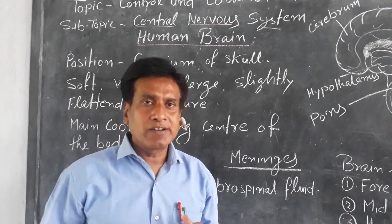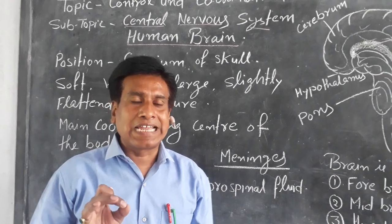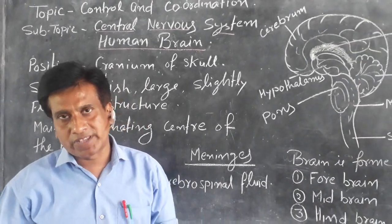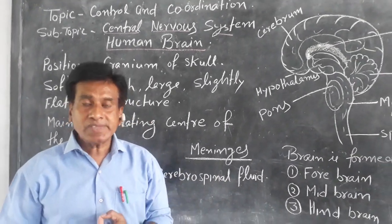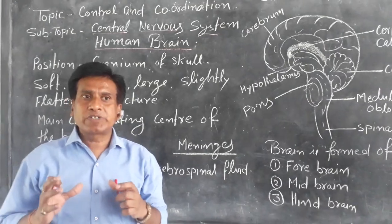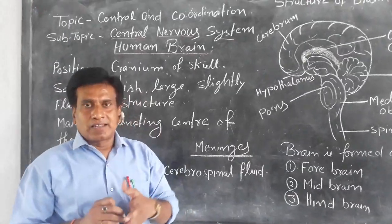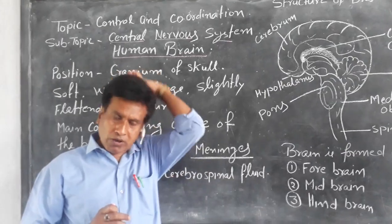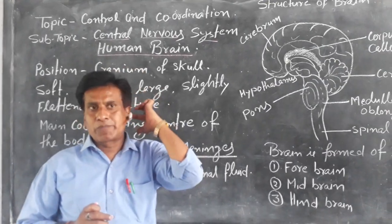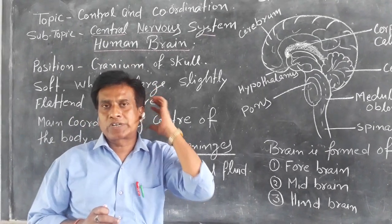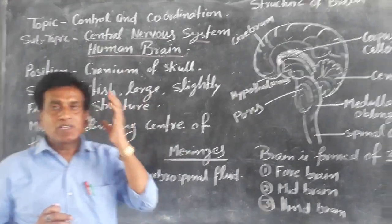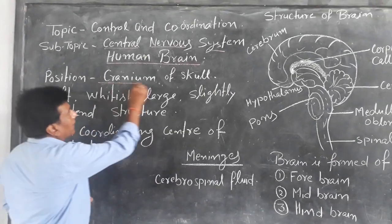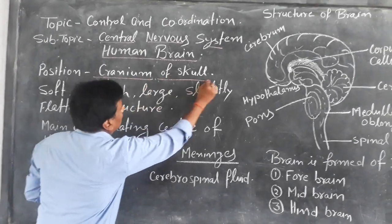As we know, the brain is the most delicate and important organ of our body. It is situated in our skull — actually, it is situated in a brain box. This brain box is also known as the cranium. So it is situated in the cranium, or skull.